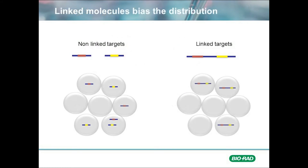Next, we run our assay and let statistics and distribution analysis take over. To determine whether the two targets are linked or non-linked, we look at variations in the distribution of positive signals within our droplets. When two targets of interest are not linked, they can land in individual droplets or occasionally in the same droplet.